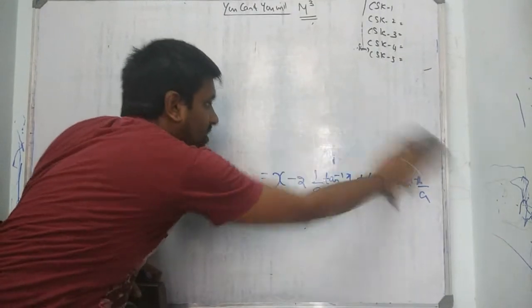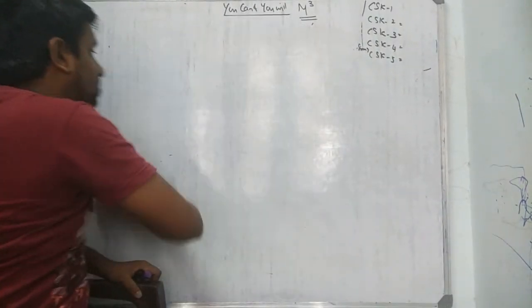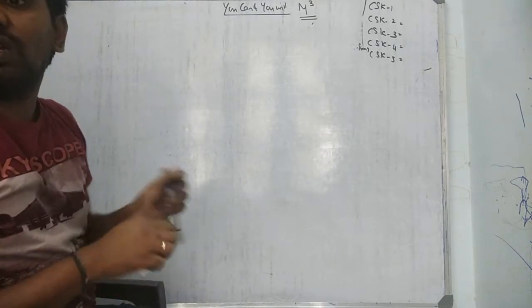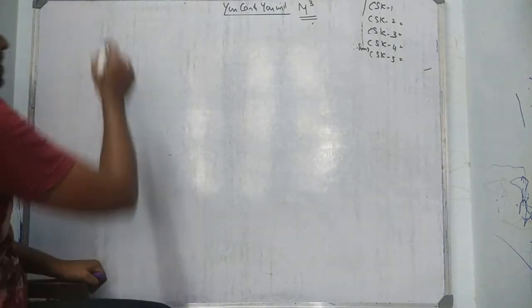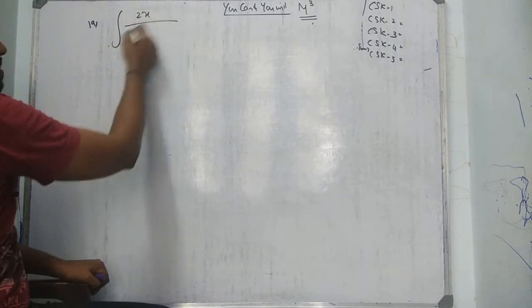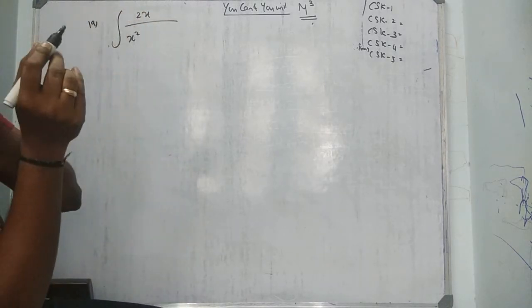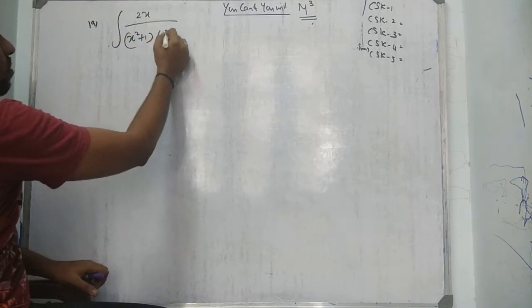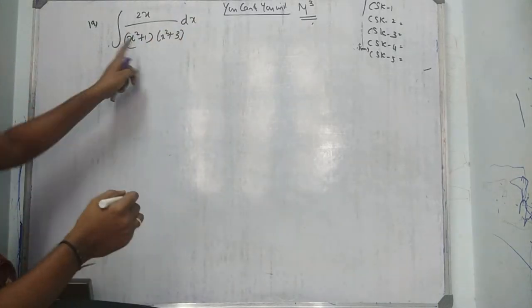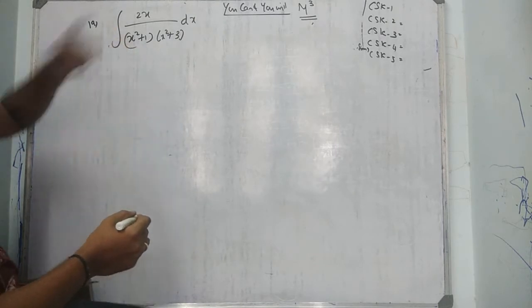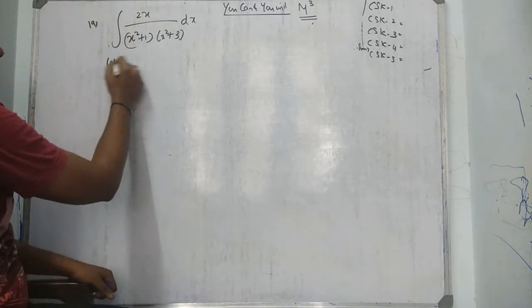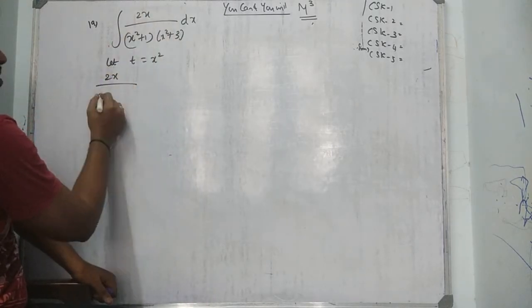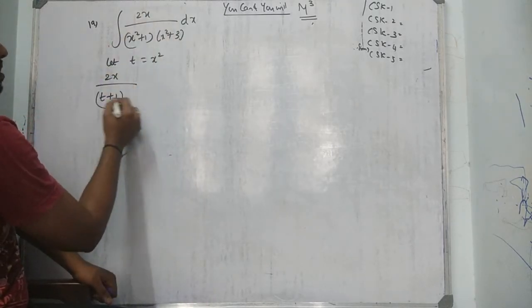Question 19 is a very easy sum. Whenever x⁴ or x² terms appear, change into another variable. Question number 19: numerator is 2x, denominator is (x² + 1)(x² + 3). You might think of a² minus b² but there's no other way. Let t equal to x² and simplify — don't differentiate yet.